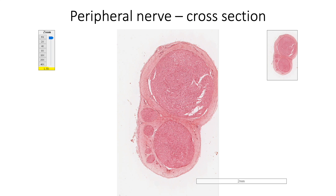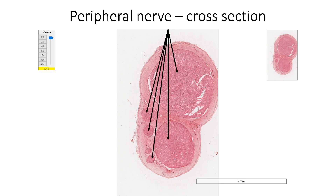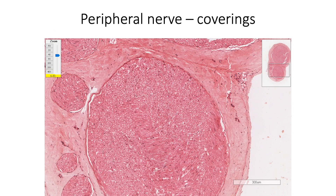In a cross section of peripheral nerves seen in this image, you are seeing multiple nerve fascicles or nerve bundles. Epineurium covers the entire nerve and also fills the space between the fascicles. It is made up of dense irregular connective tissue.